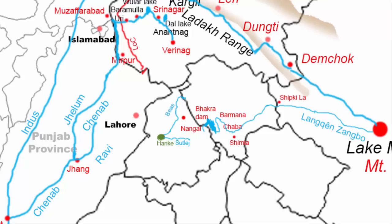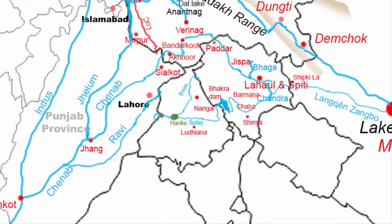After crossing Nangal, the river flows south for about 60 km, then turns west and passes through the Ludhiana district, reaching the Harike wetland where the Beas River joins the Sutlej. The Sutlej continues to flow west for about 30 km and crosses the Indo-Pakistan border into the Punjab province of Pakistan. The river then meanders around the Indo-Pakistan border and flows south-west for about 120 km, before entering fully into the Bahawalnagar district in south-east Punjab province of Pakistan. The river continues south-west and joins the river Chenab.